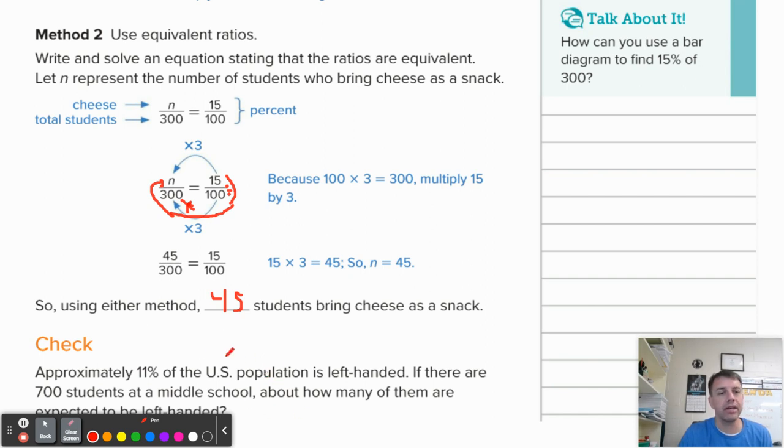Then notice down here, the check: approximately 11% of the population is left-handed. I didn't know that. It's interesting. If there are 700 students at a middle school, about how many of them would we expect to be left-handed? So here's where I would tell you, go ahead and pause, see if you can do this on your own, then come back. Alright. So now that you're back, let's go ahead and work this one out. So we would have 11%, which means we have 11 over 100.